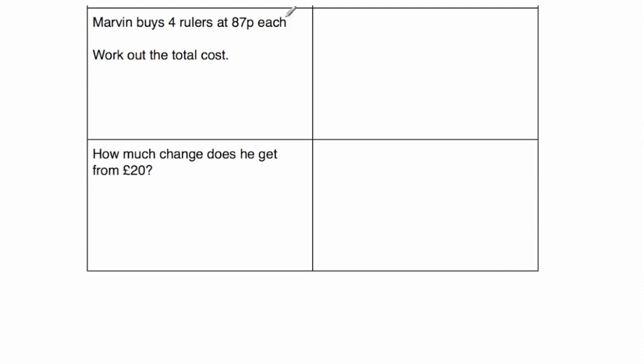Next question says, Marvin buys 4 rulers at 87 pence each. Work out the total cost. So we're going to need to do 87 multiplied by 4. So 87 multiplied by 4. And when we do that, we get, well,